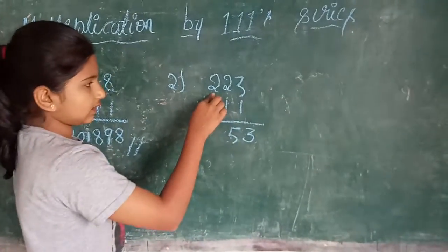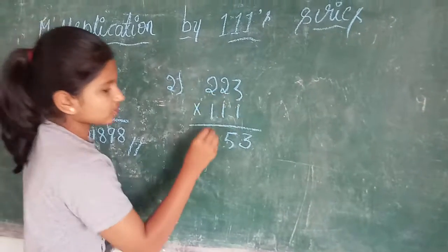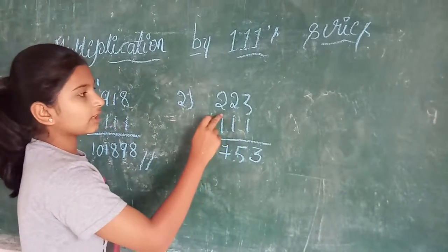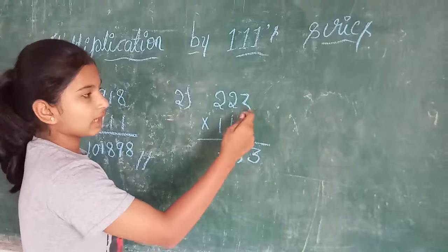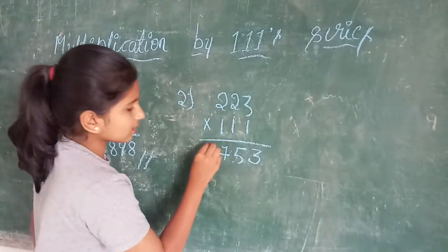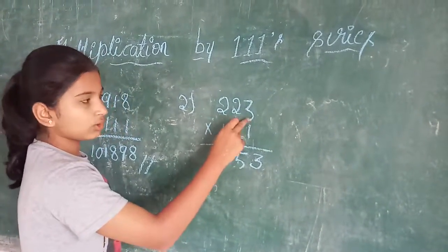Now I will write all the 3 digits. 3 plus 2 is 5, 5 plus 2 is 7. Now I covered all the 3 digits. I will leave last digit of the question. So 2 plus 2 is 4. Now I will leave the 2 digits.